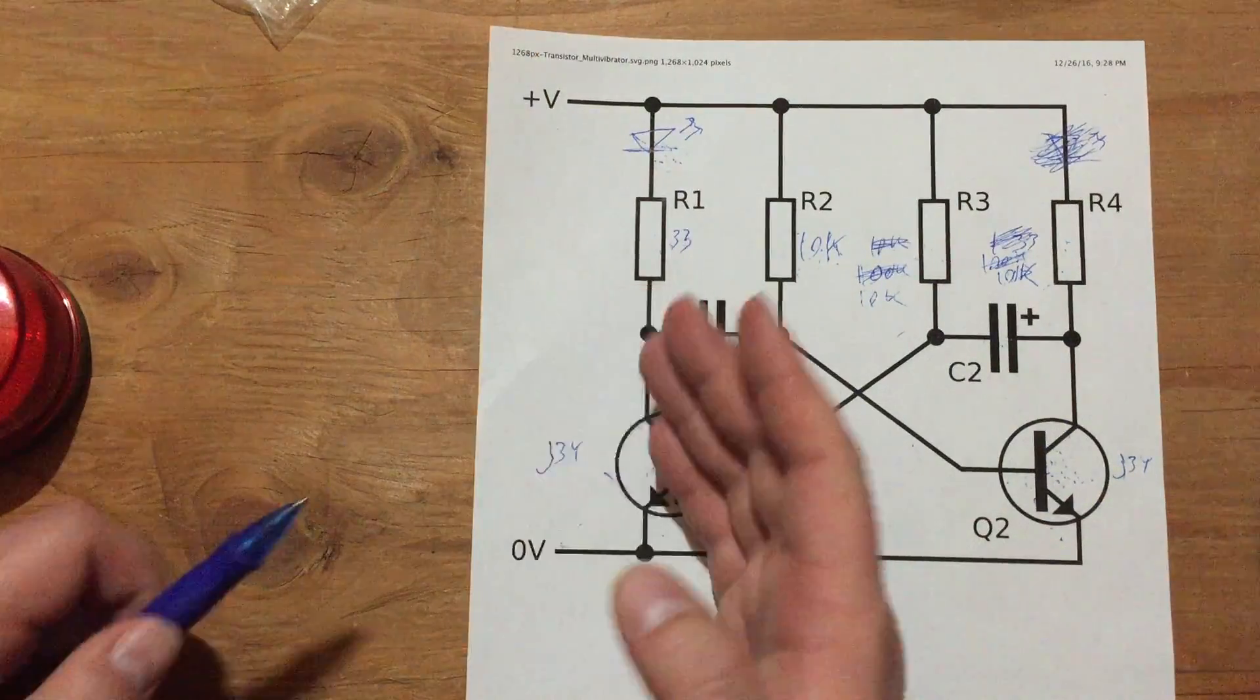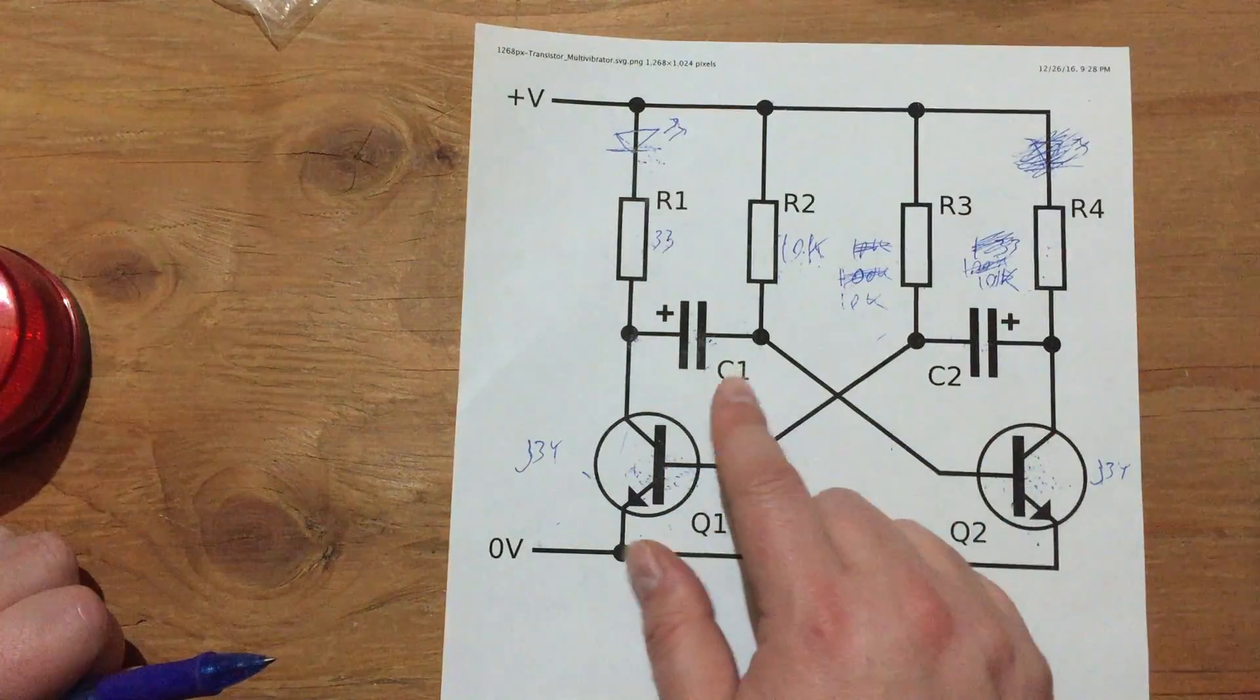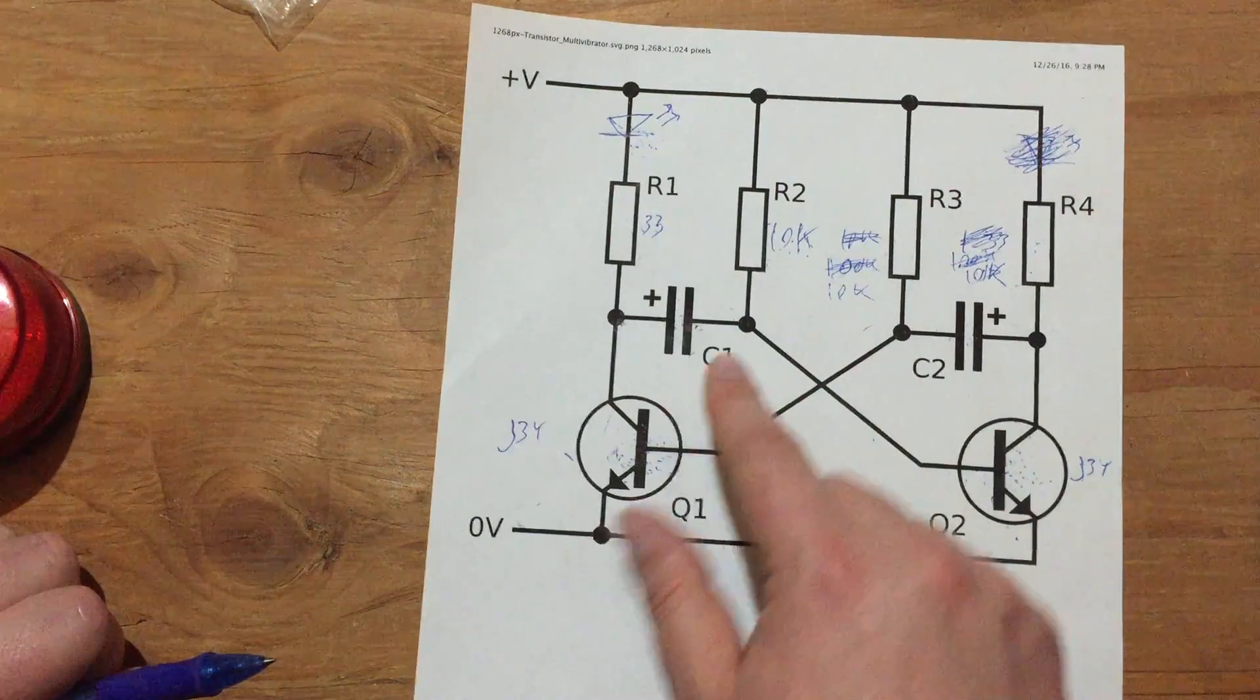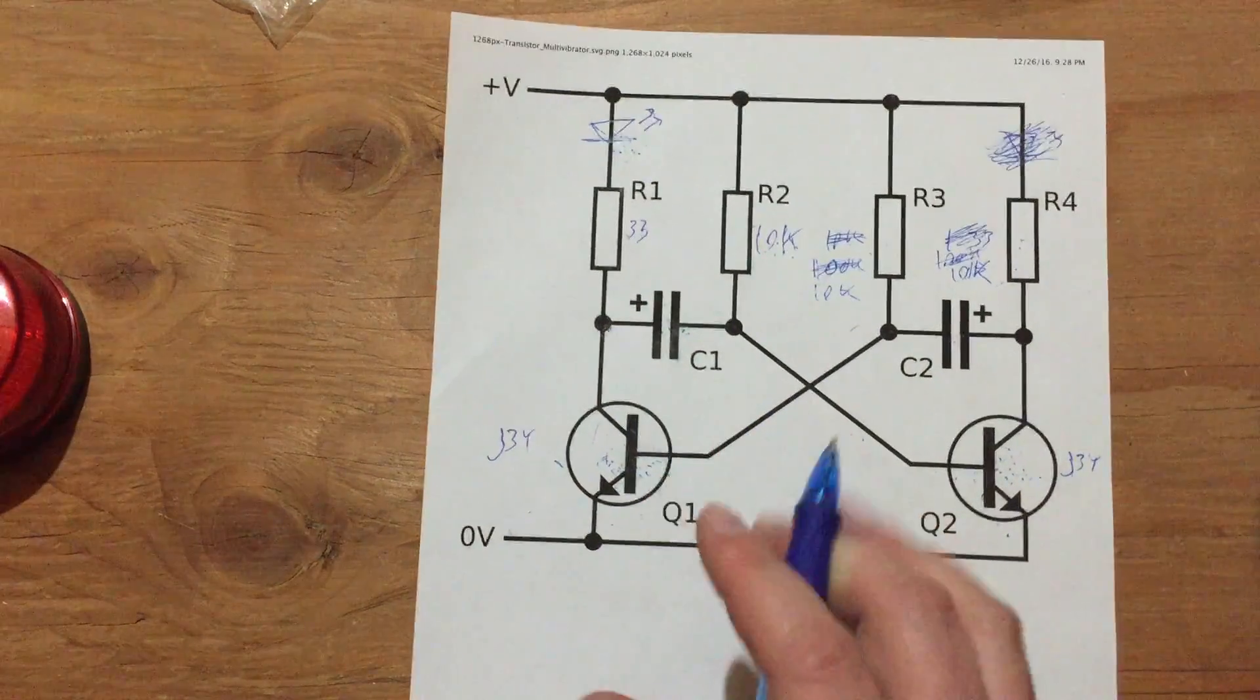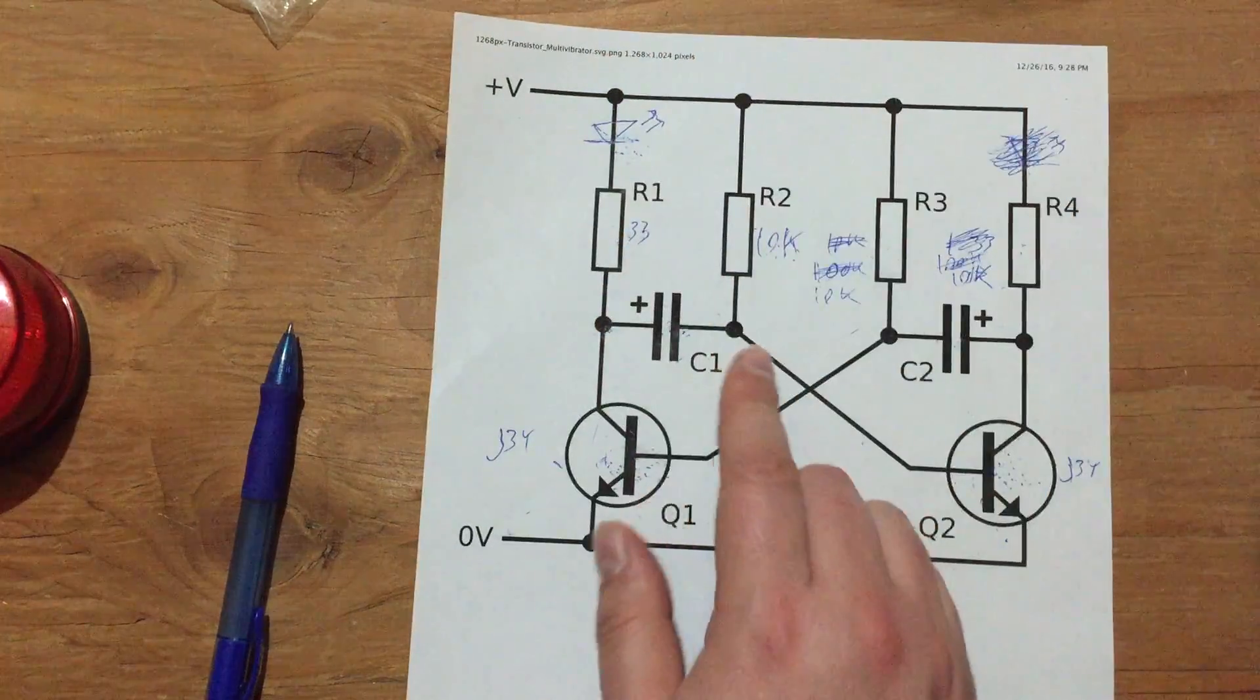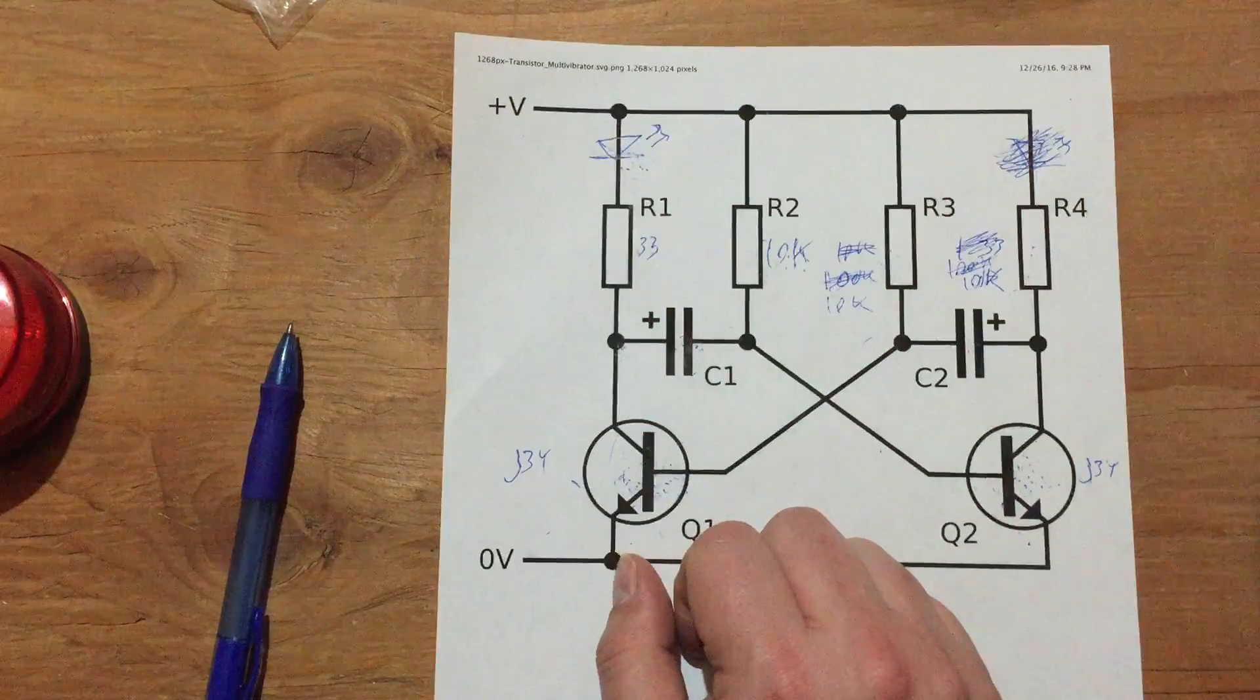So it's like a flip-flop, basically, except rather than having inputs for set and reset, it's just based on RC timing. Resistor capacitor timing circuits with these, basically. So that's all there is to it. It's like this nice symmetry of going back and forth. Each side kind of charges up, and then turns the other side on, which turns the first side off. Back and forth, back and forth. So really simple design.